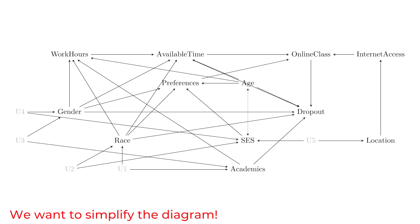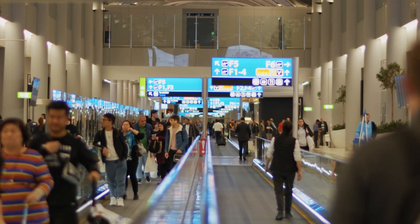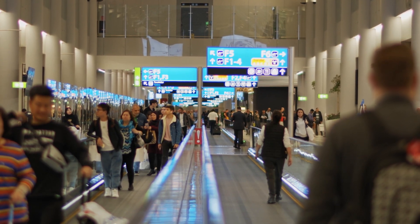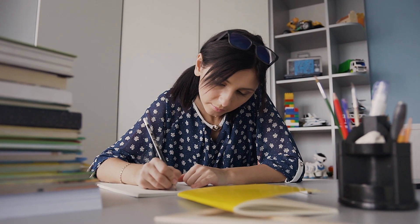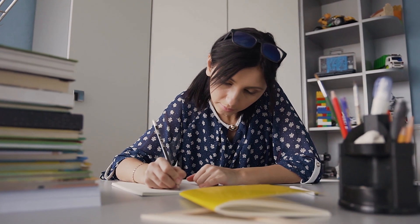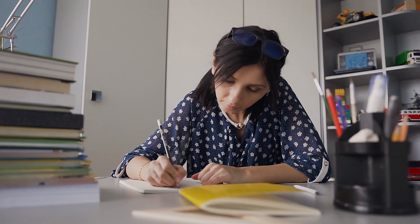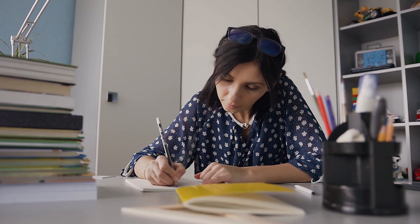Now we're going to want to simplify this diagram. You might think, well, the world is complex so maybe our diagram should also be complex — and that is true. We want to represent the real world in our diagram. We're going to want to be careful as we go through simplification not to simplify too far so that we end up with something that doesn't really represent the real world.